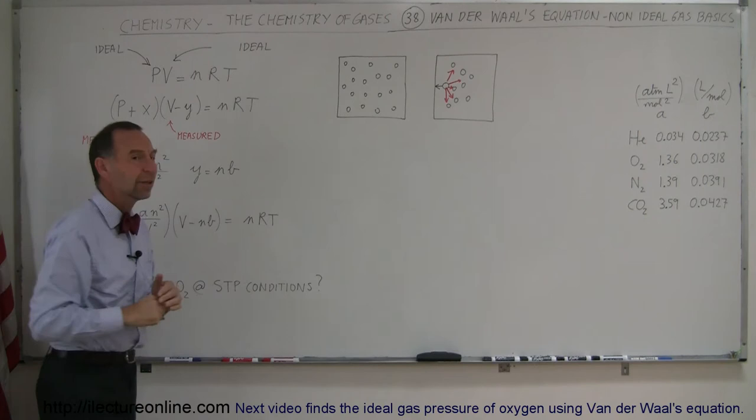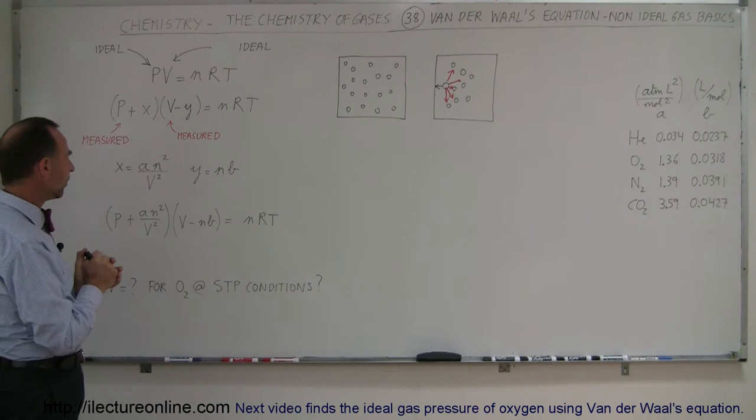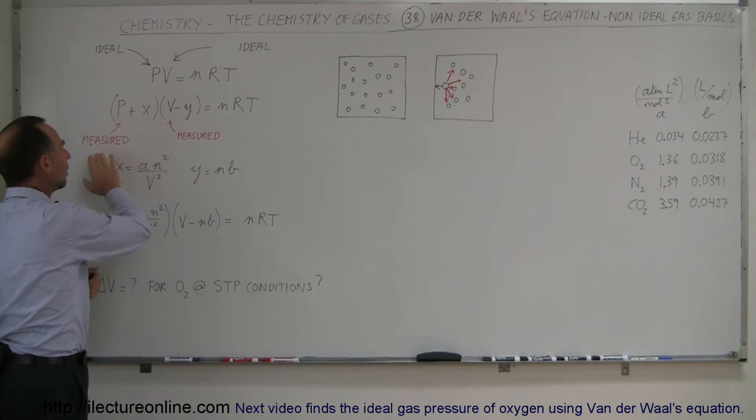All the laws regarding the PV equals nRT equation assume an ideal gas, so everything we calculate assumes an ideal gas. When that's not the case, we need to figure out how to make the adjustment.